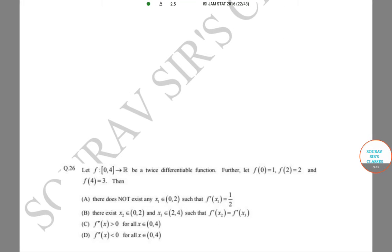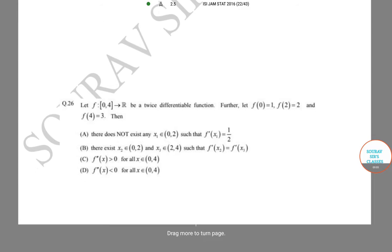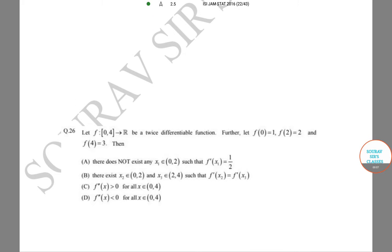Hello students, welcome to Saurav Shukla's classes. The problem that we want to solve today says: let f from [0,4] to R be a twice differentiable function. Further, let f(0) = 1, f